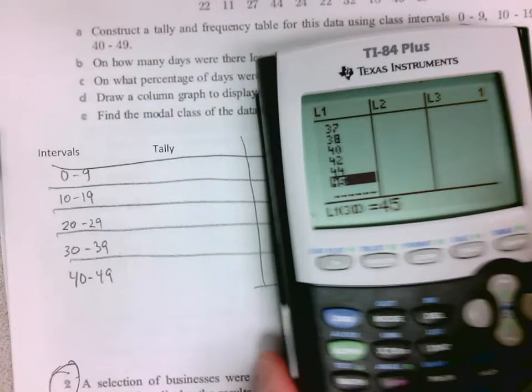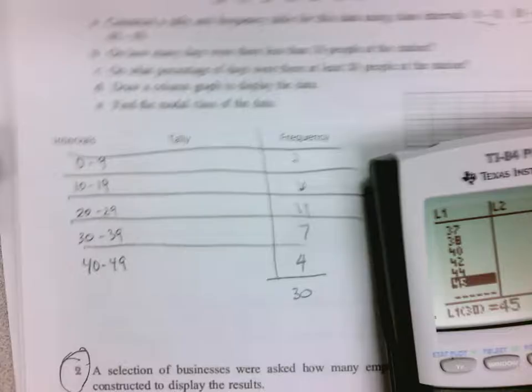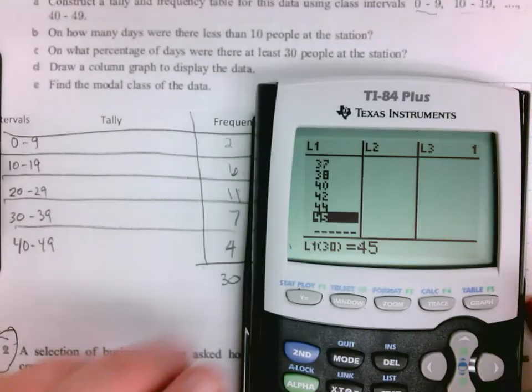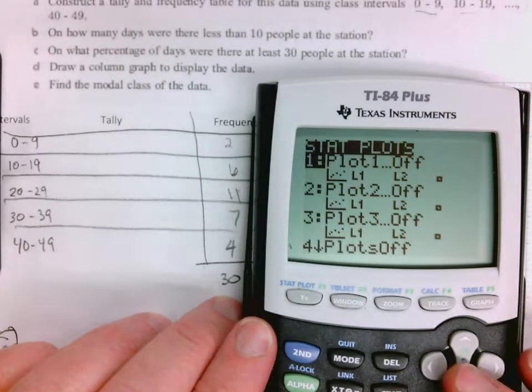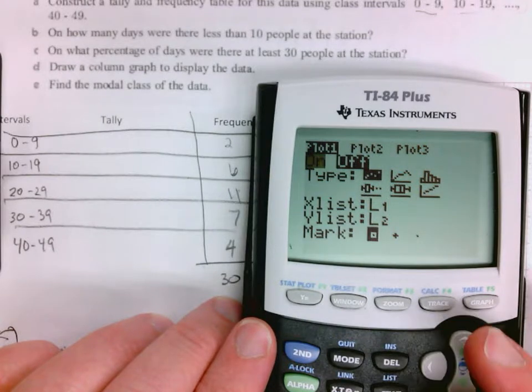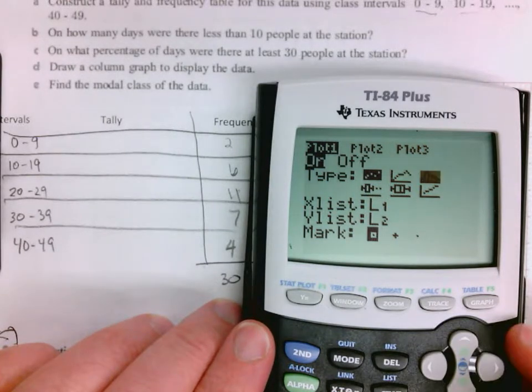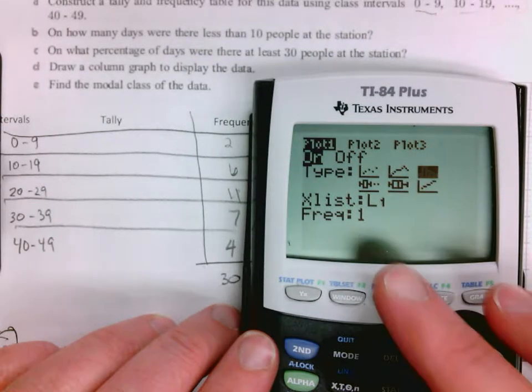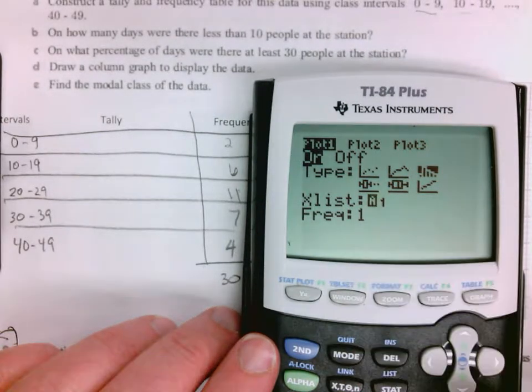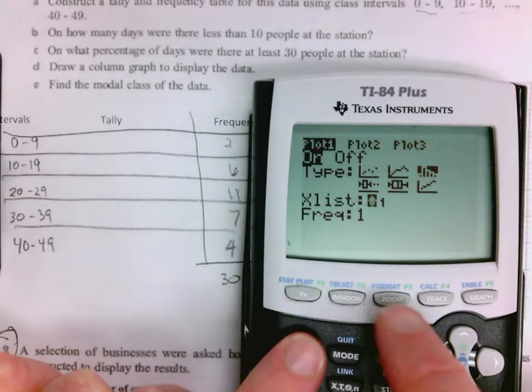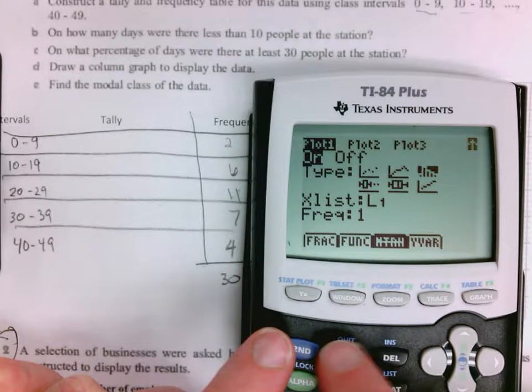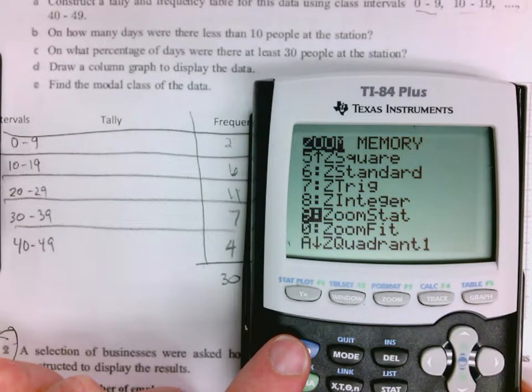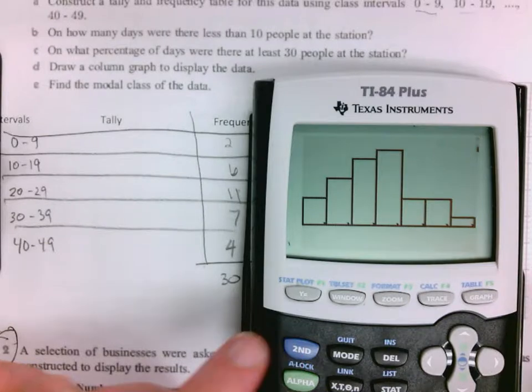A caution here is don't assume that your calculator is going to make the bar graph the way you want it to. If I go to turn on my stat plot and select bar graph for my list, list one—I still have list one, I don't have the frequency data in here—and I do zoom stat.